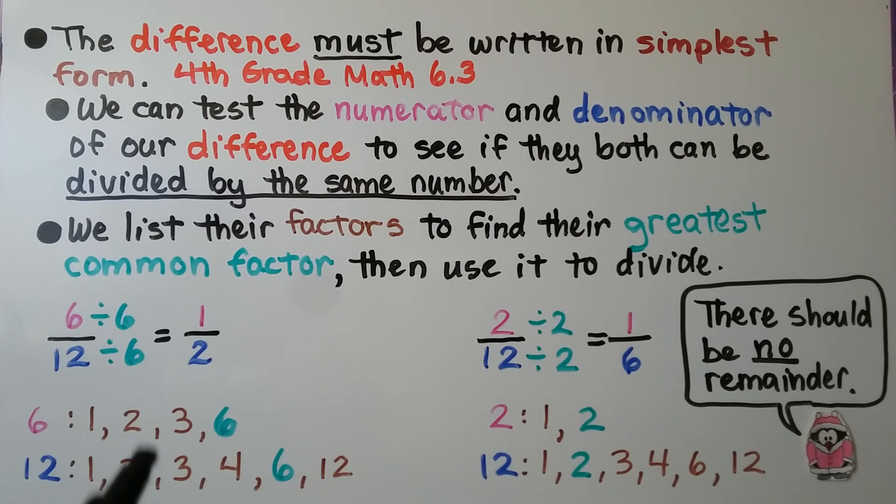We list their factors to find their greatest common factor, then use it to divide. The factors for six are one, two, three, and six. The factors for twelve are one, two, three, four, six, and twelve. For six-twelfths, their greatest common factor is six. We divide the numerator and denominator by that same number six, and it equals one-half.